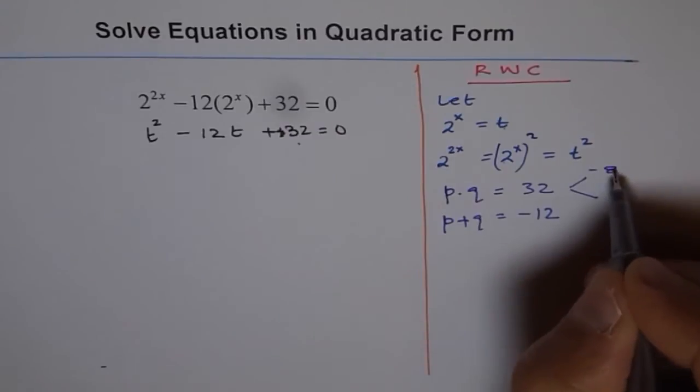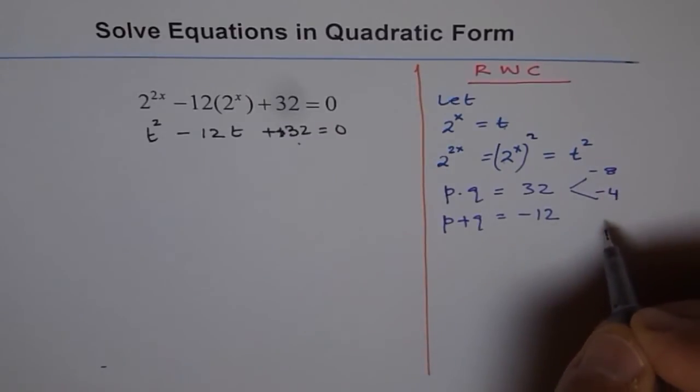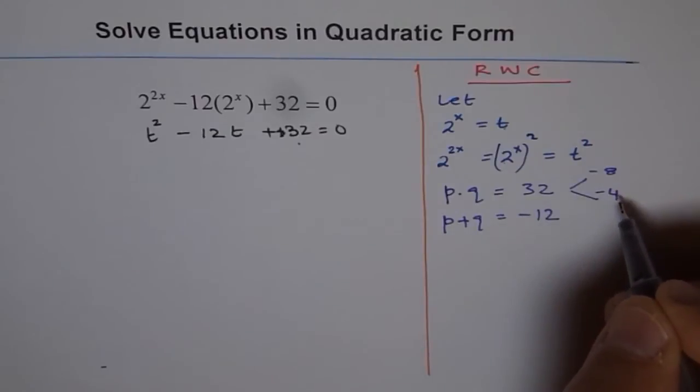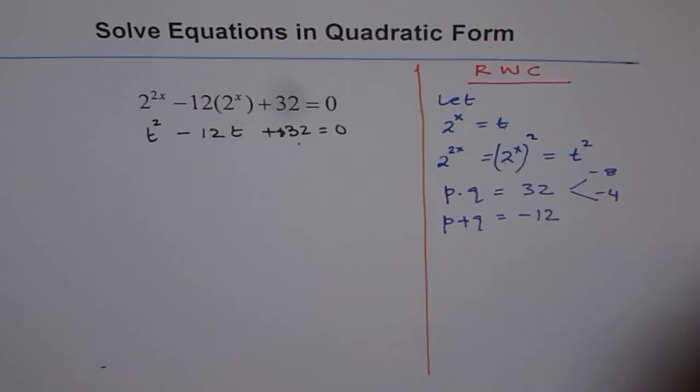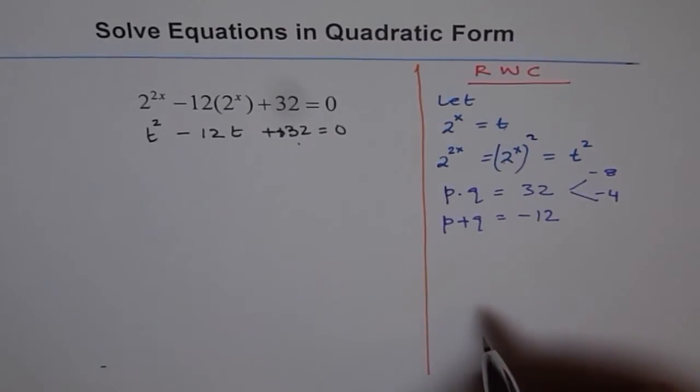So let's have minus 8 times minus 4. When you multiply negative negative, you do get positive. 8 times 4 is 32. When you add them, you get minus 12. So that works. So we will use these two numbers and factor our equation.